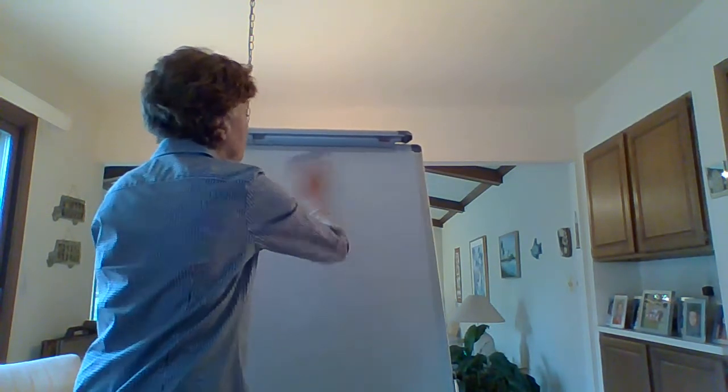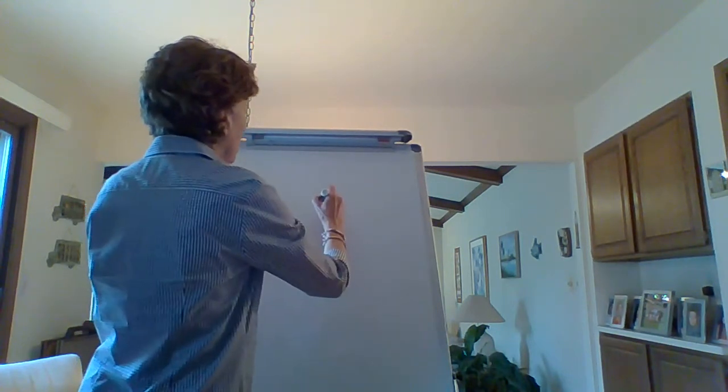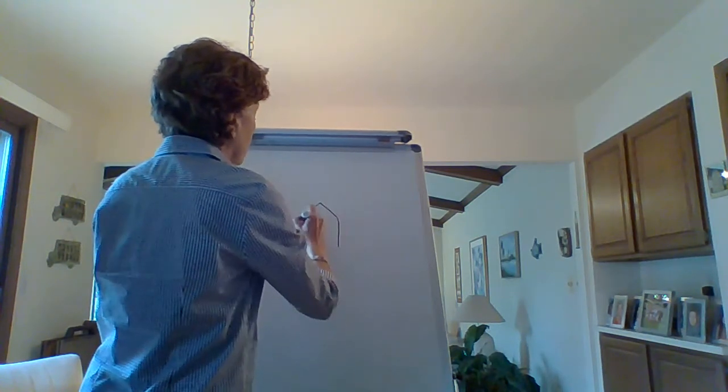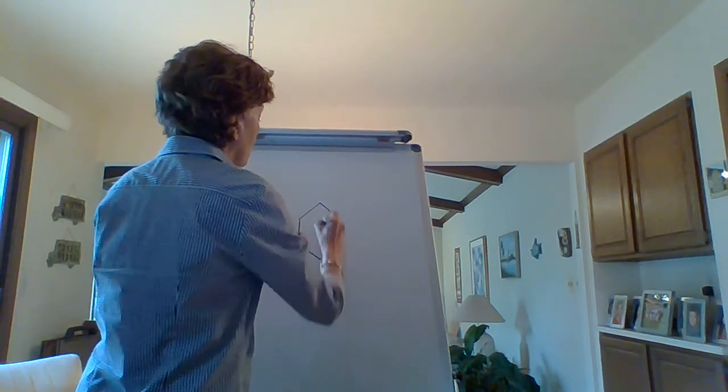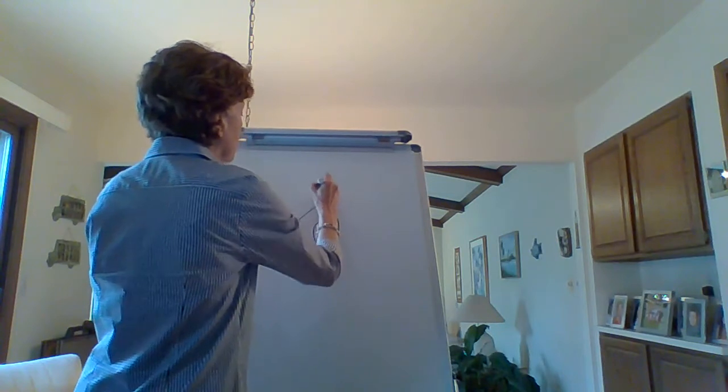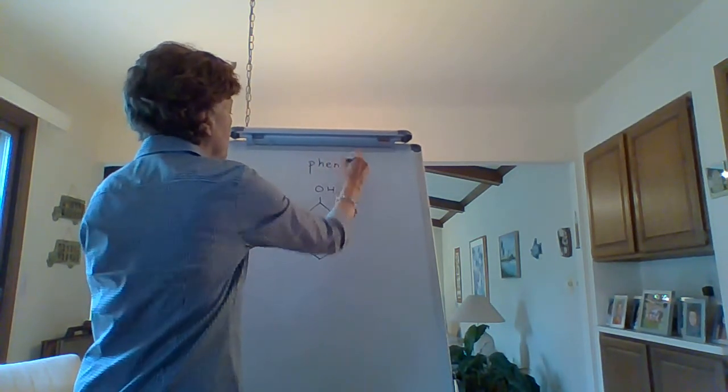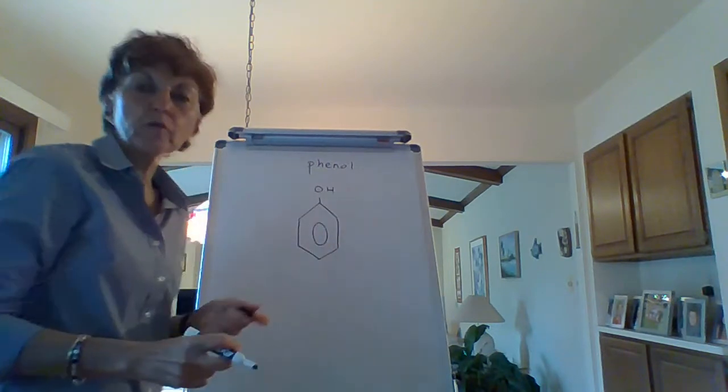Phenol is a special type of alcohol in a different category because a phenol is a benzene ring with an OH attached. When we had a benzene ring with a methyl group, we called it toluene.